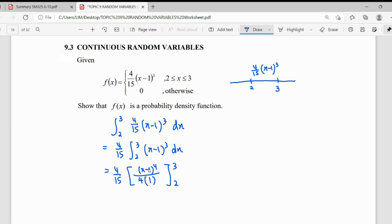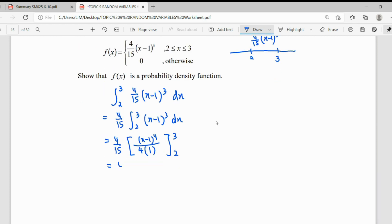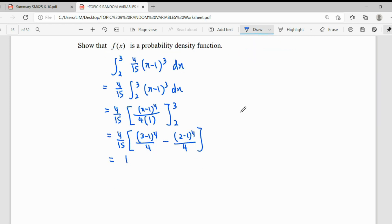Then write our upper limit and lower limit clearly. We show our step, which is upper limit minus lower limit. We just press our calculator, and this will give us exactly one.